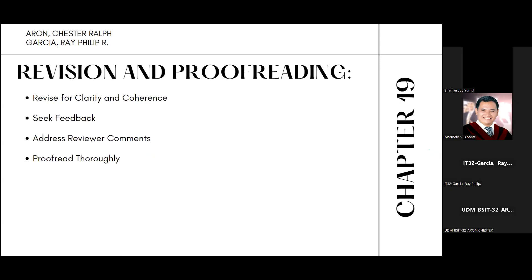Next is revision and proofreading. First, revise for clarity and coherence. Review and revise your manuscript for clarity, coherence, and logical flow. Second, seek feedback. Share your draft with colleagues, mentors, and peers to get feedback on content and structure. Next, address reviewer comments. If your article undergoes peer review, carefully address any comments provided by reviewers. Then proofread thoroughly — eliminate grammatical errors, typos, and formatting issues through meticulous proofreading.